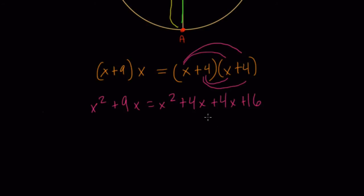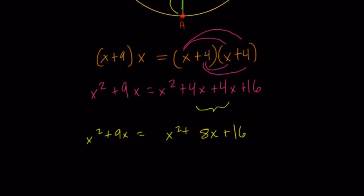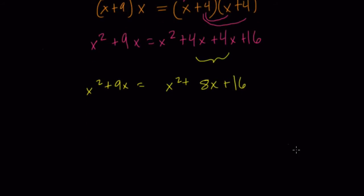So if we simplify the right-hand side here, 4X plus 4X is 8X. We still have plus 16 and X squared, and on the left-hand side, we have X squared plus 9X. Now here, you might be thinking, oh, we'll have to do something with the quadratic formula because we have an X squared, but if we subtract X squared from both sides right here, the X squareds cancel out. So these cancel out, and we're left with 9X equals 8X plus 16.